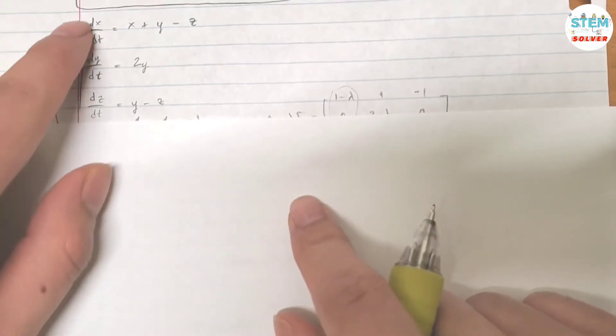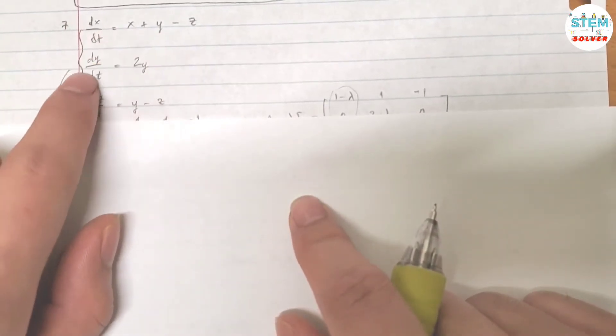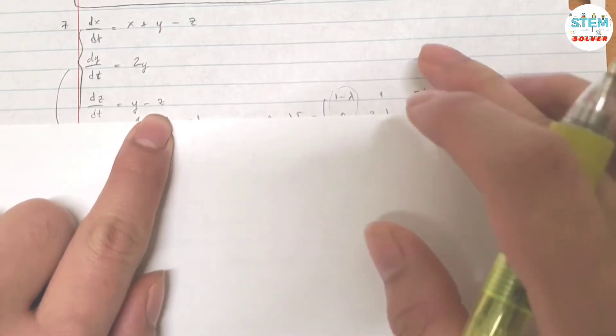Find the general solution of the given system. You're given dx/dt equal this, dy/dt equal this, and dz/dt equal this.